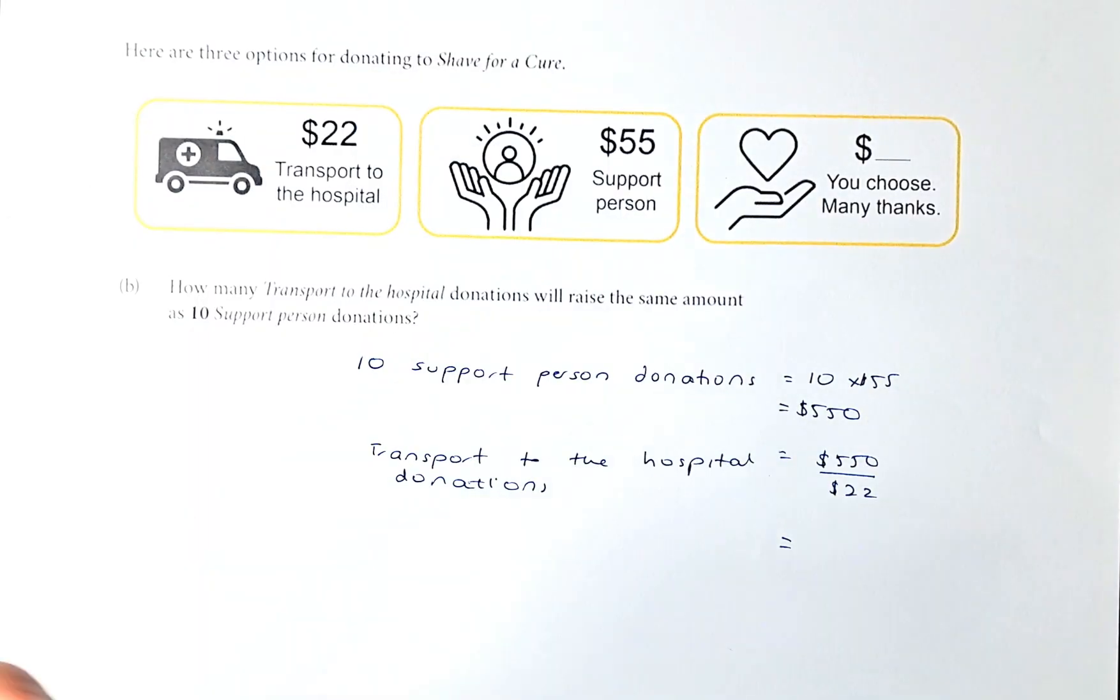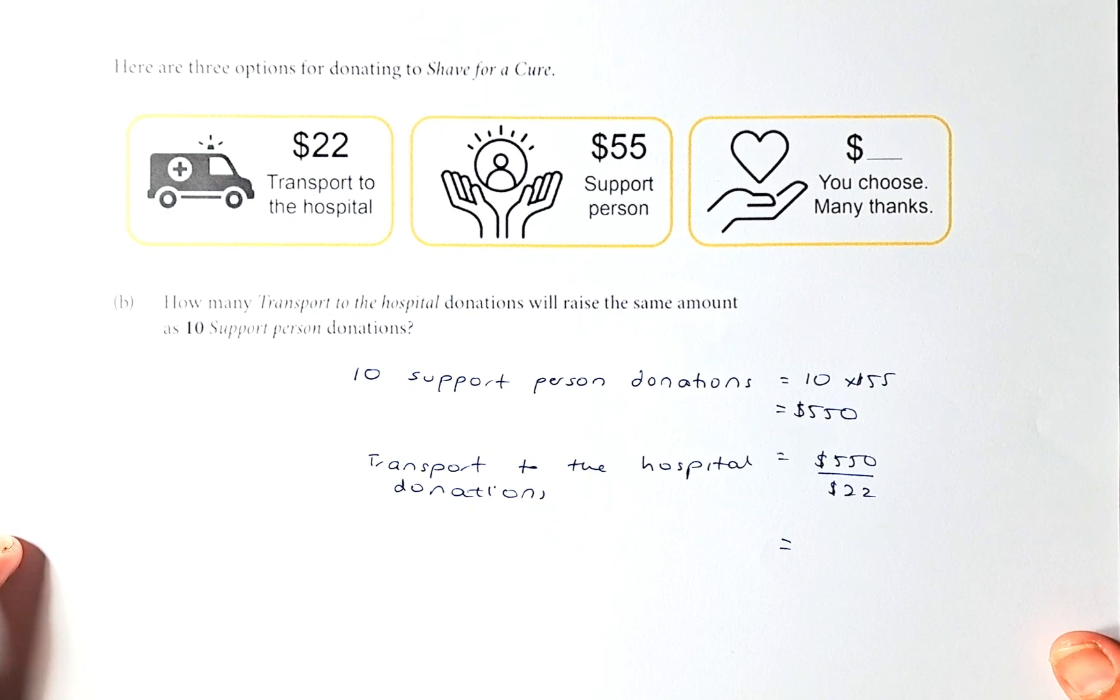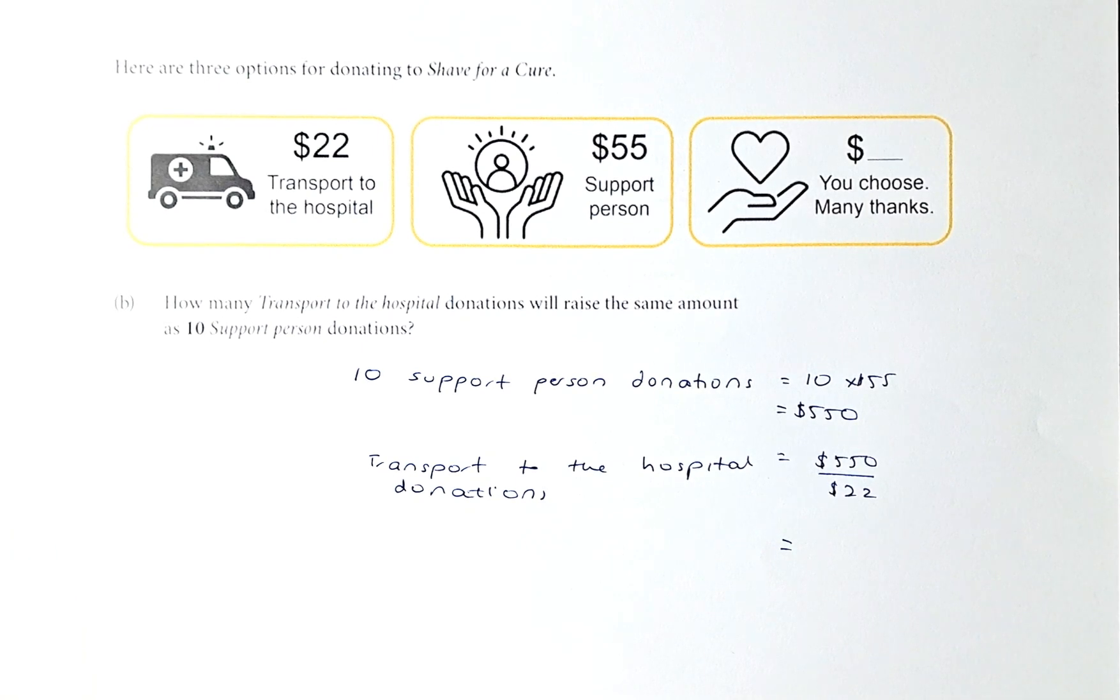3B sounds like this. So we shall read the question and adjust the paper a bit. Here are three options for donating for shave for a cure. $22 for transport to the hospital, $55 to support a person, and you can choose your own amount with many thanks. The question is how many transport to the hospital donations will raise the same amount as 10 support person donations.